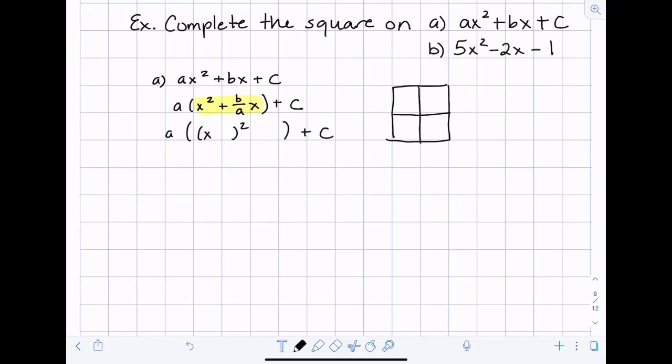So when you square something what that does is it takes that constant and you end up getting two times that for the middle term. So I know that if I go with plus b over 2a I should be able to get back to b over a x when I square it. So I'm going to check out that pattern and make sure that it was correct.